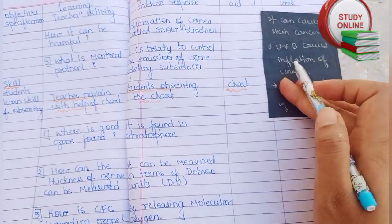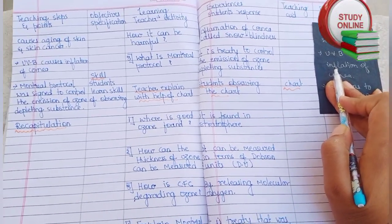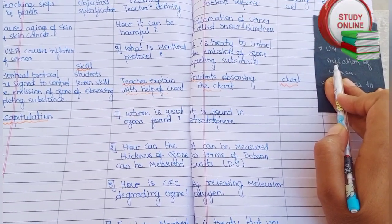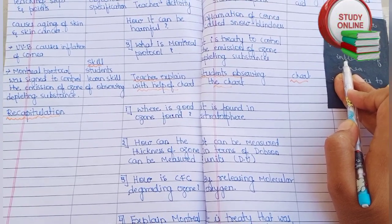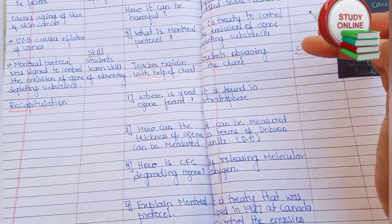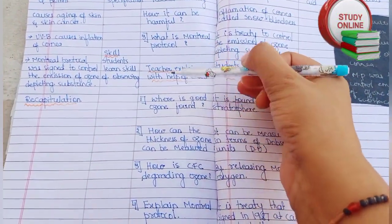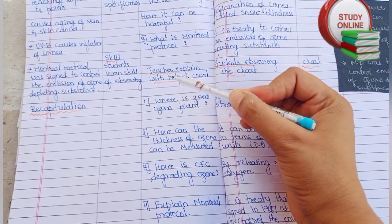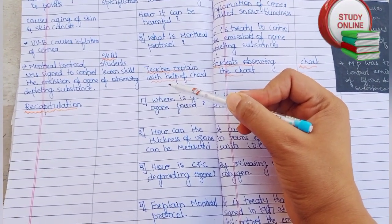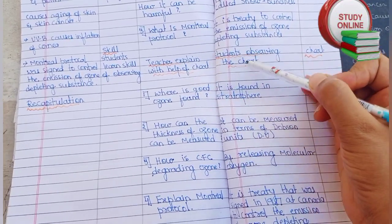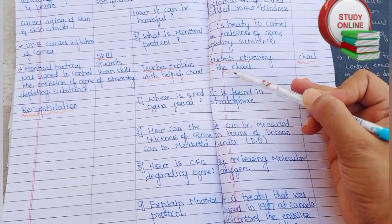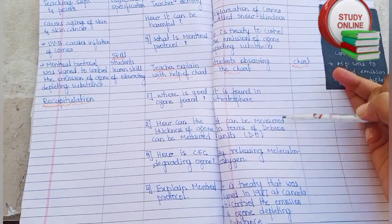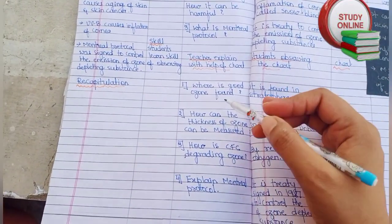Here is the blackboard work — I hope everything is visible and you can understand what I have written. After explaining properly, the teacher explains everything with the help of a chart or model, students observe the chart, and in the teaching aid column we write chart. Now moving to the recapitulation section.